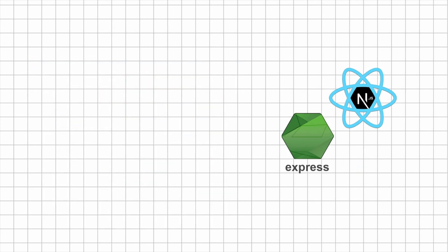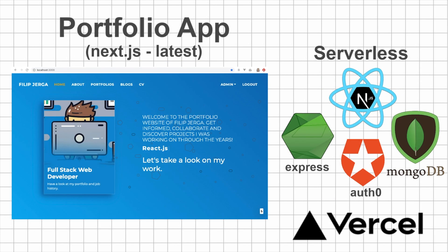The second section covers a portfolio serverless application, covering the latest features of Next.js, with a separate Express API, using a Mongo database for data storage and Auth0 for authentication, plus deployment to Vercel.